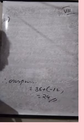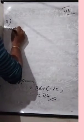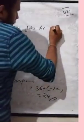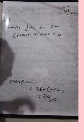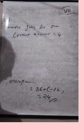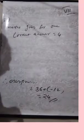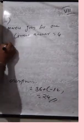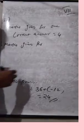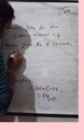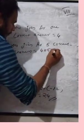Marks given for one correct answer equals 4. Marks given for 5 correct answers equals 4 into 5, which is 20 marks.